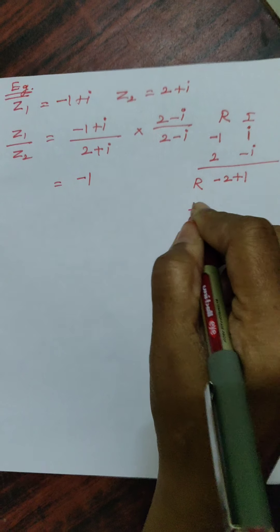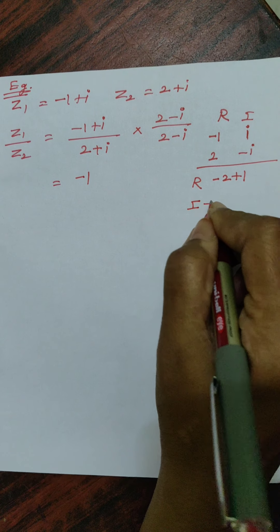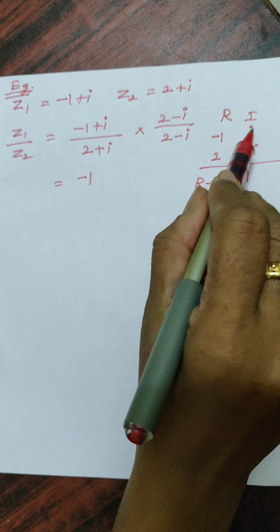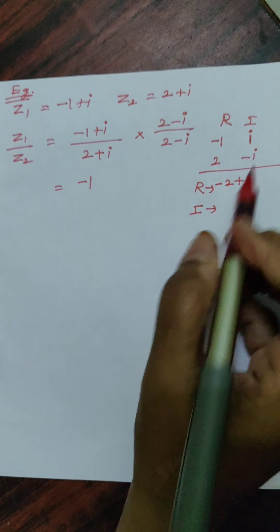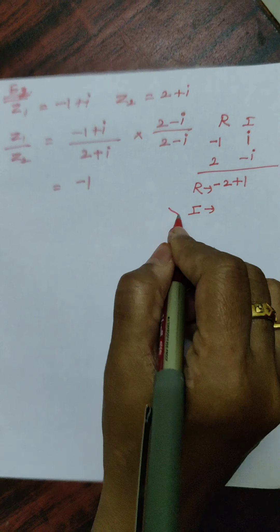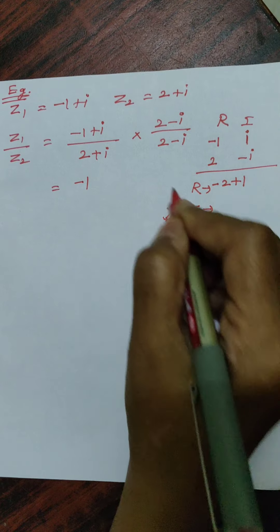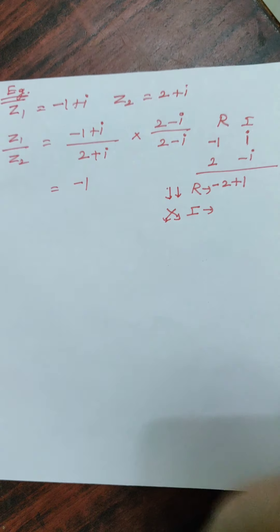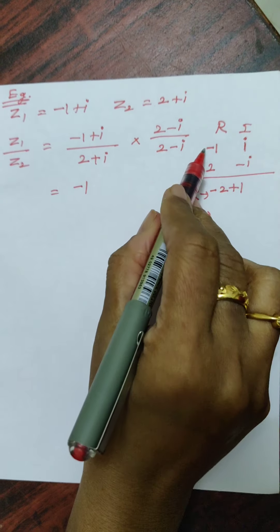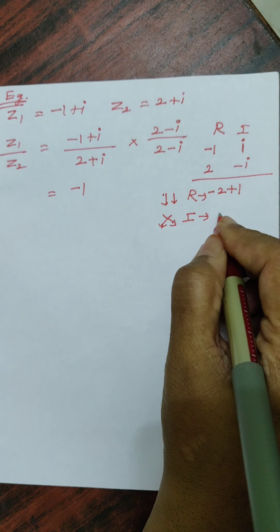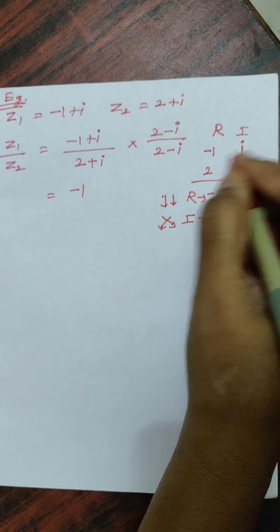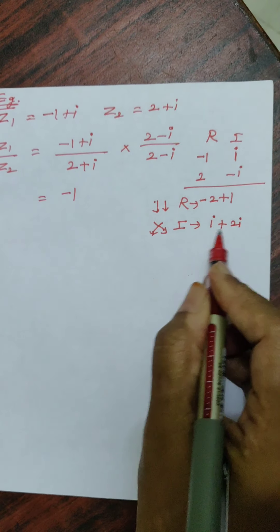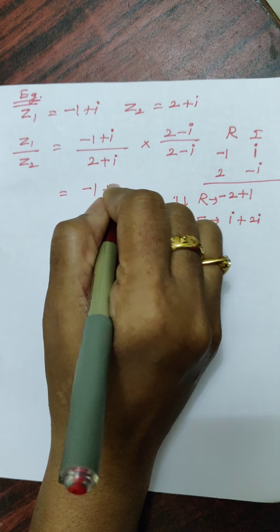For the imaginary part, cross multiply: minus 1 into minus i becomes i, and 2 into i becomes 2i. So the answer is i plus 2i equals 3i. The denominator is (2 plus i)(2 minus i), which equals a squared minus b squared — that is 4 minus i squared equals 4 plus 1 equals 5.